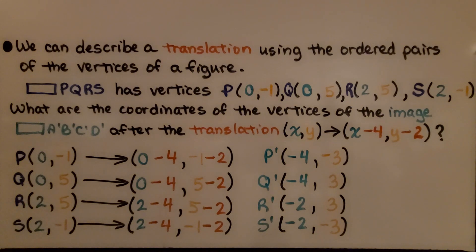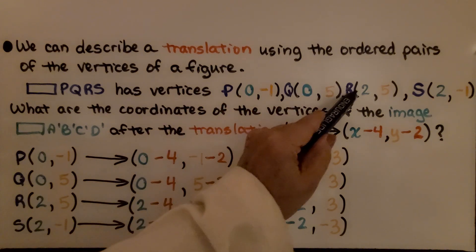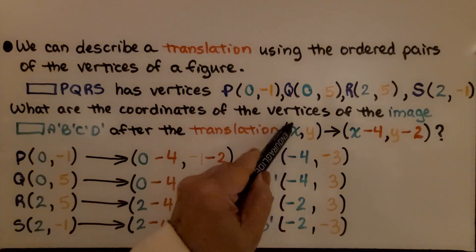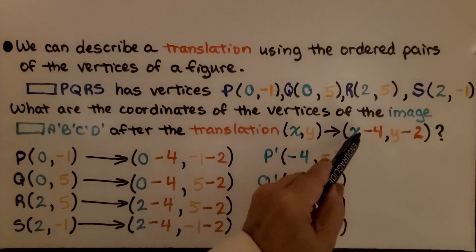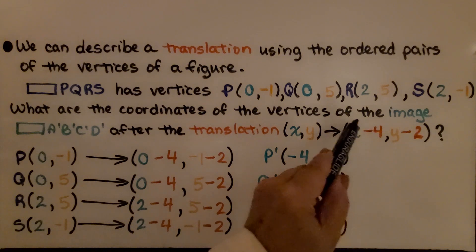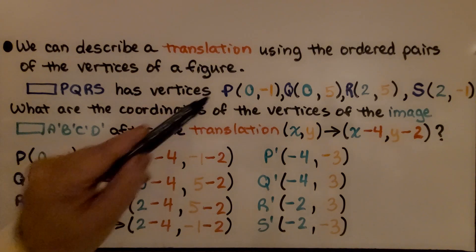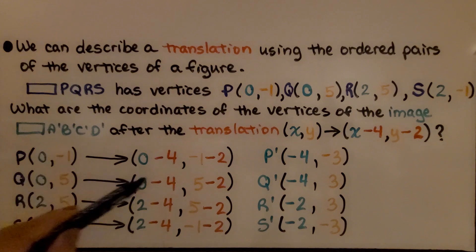We can describe a translation using the ordered pairs of the vertices of a figure. We have rectangle PQRS with vertices: P at (0, −1), Q at (0, 5), R at (2, 5), and S at (2, −1). The translation rule is x minus four and y minus two, so x is going to the left and y is going down. P translates to (0−4, −1−2), so P prime is at (−4, −3).